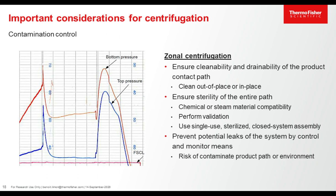To control contamination in a closed system, one should ensure that the product path is clean and sterilized by performing cleaning and decontamination validation, or by using single-use, sterilized, ready-to-use assembly sets. In addition, the system should be designed to prevent potential leaks, especially at the union slip drives.